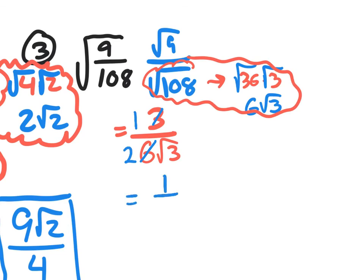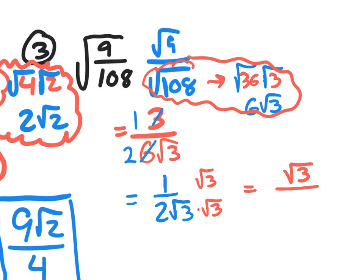But we cannot leave a radical in the denominator, so I need to multiply by itself — the square root of 3 — both top and bottom. Up on top I have square root of 3. On the bottom, the 2 that's there times square root of 3 times square root of 3, and square root of 3 times square root of 3 is just 3, so the denominator becomes 2 times 3 which is 6. So the final answer is square root of 3 over 6.